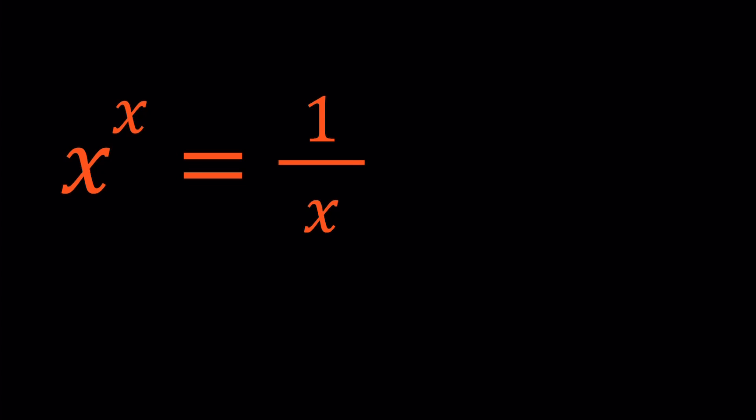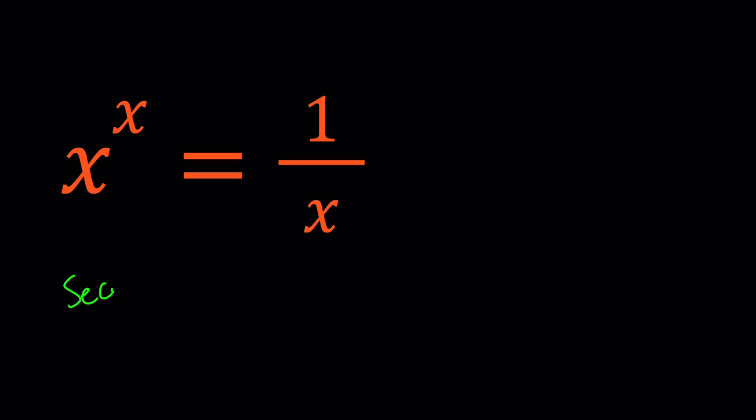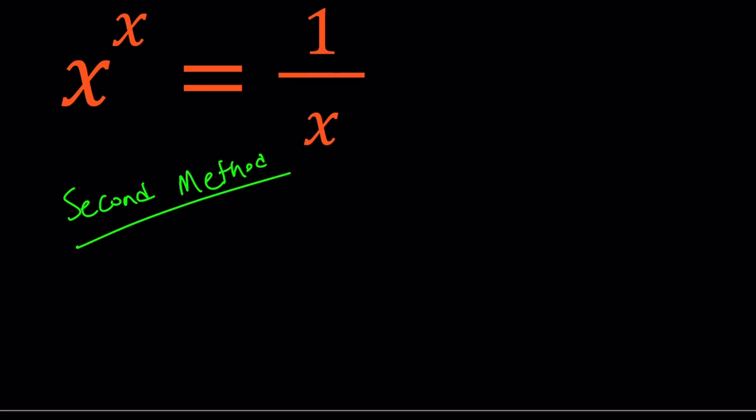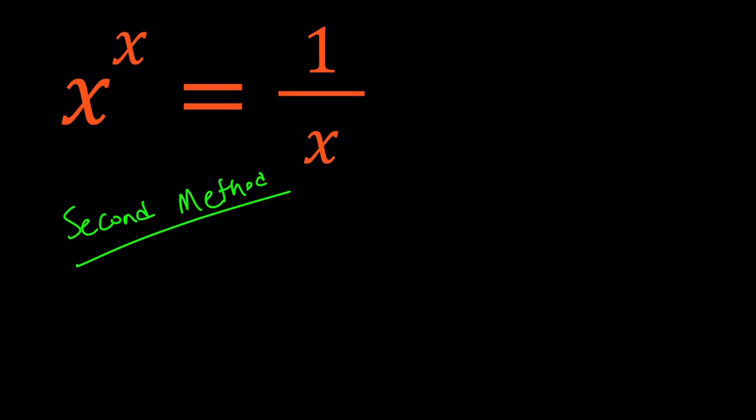So I'll be presenting two methods and let's start with the second one. Second method. For my second method, I'm going to do the following. First of all, I have x to the power x equals 1 over x. I'm going to cross multiply. So this gives us x to the power x times x equals 1.